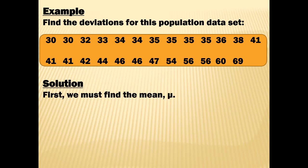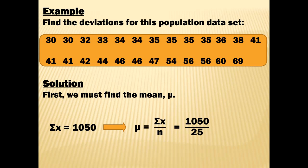To find the deviations, we first need the mean. We add up all 25 numbers — they add up to 1,050. Since it's a population, mu equals 1,050 divided by 25, which is 42. So the mean of this population data set is 42.